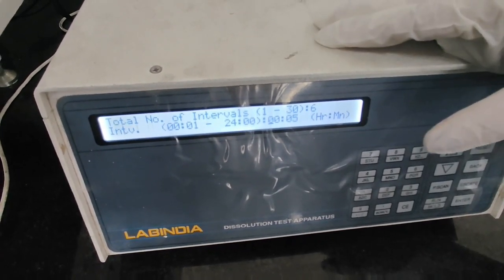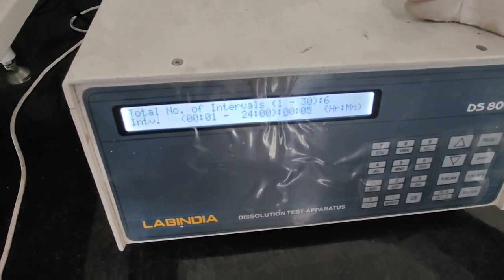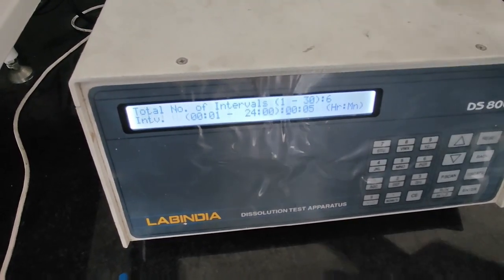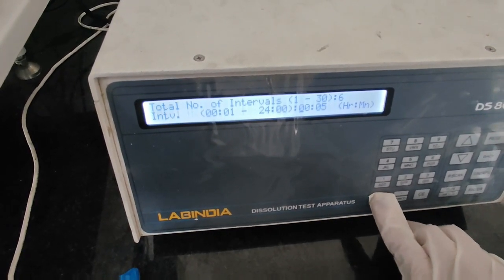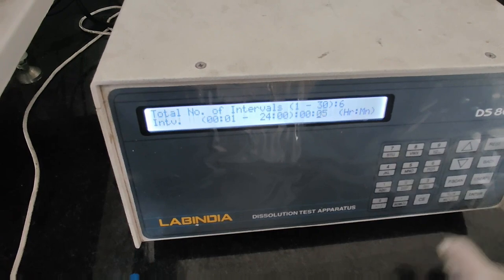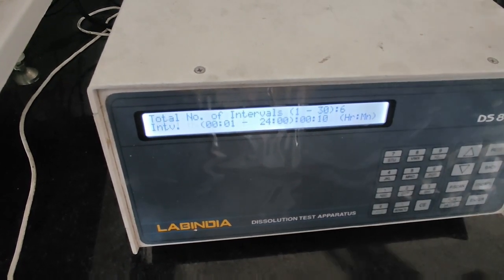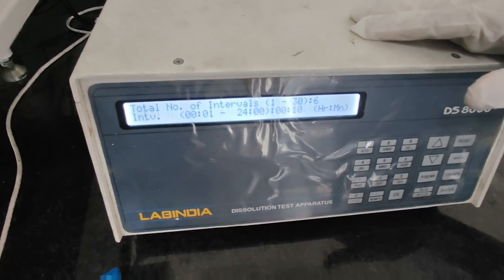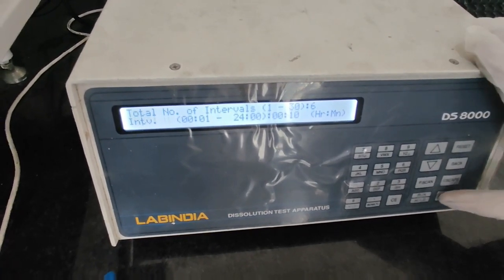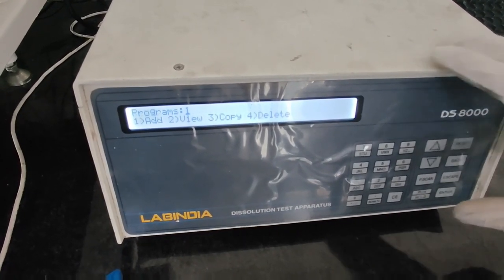Then interval time. I want to take readings after every 5 minutes. It is already 5, but I will show you how to change it. For example, I have selected 10 minutes. Again enter, then 1 and 0. Now it is after every 10 minutes, you will hear a beep sound and you have to take the sample. Then press enter. Recovery test, I don't require that. Press enter.